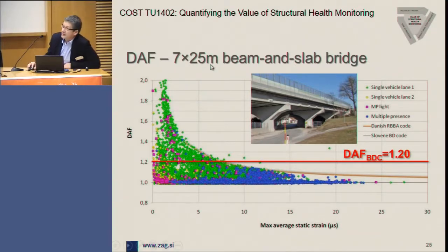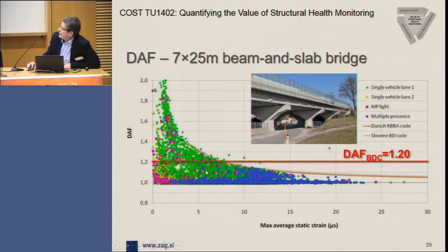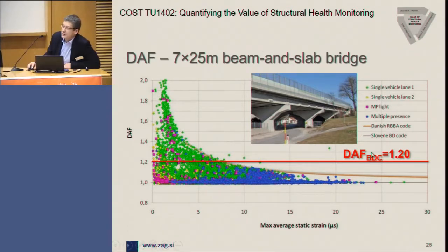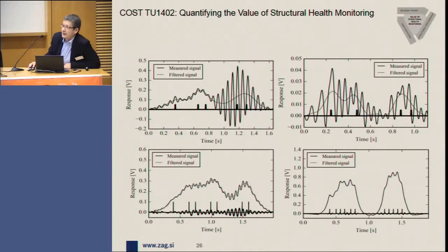Within the CWIM weigh-in-motion system, we developed a method that evaluates the dynamic amplification factor for every vehicle crossing the bridge. For this seven-times-25-meter bridge, the design load rule would require a dynamic amplification factor of 1.2, but individual vehicle dynamic amplification factors show that as strains and loadings increase, the dynamic amplification factor goes down. This reserve in dynamic loading is very beneficial when assessing existing bridges. For lighter vehicles the dynamics are very lively, whereas for heavy special transport you can hardly see any dynamics in the signal.